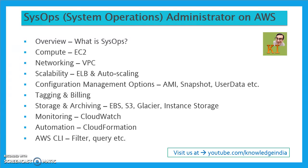For the SysOps exam, you need a very strong hold on EC2, VPC, Auto Scaling, and ELB. The first three areas — compute, networking, and scalability — are really important and together cover roughly 40 to 50 percent of the exam questions. In upcoming tutorials we'll do a lot of practicals around these, actually playing with these services to learn their different aspects. We need to understand EC2 in detail: from creation, monitoring, and maintenance to its different attributes.